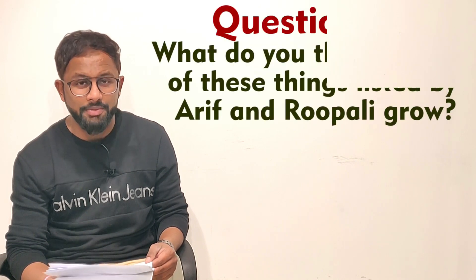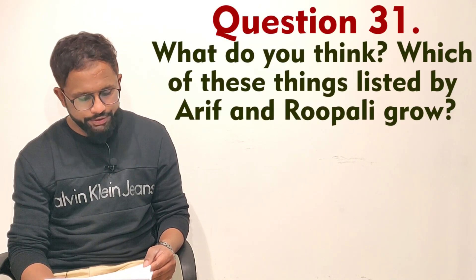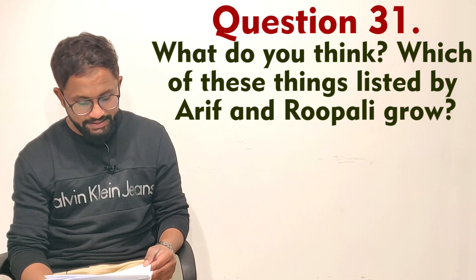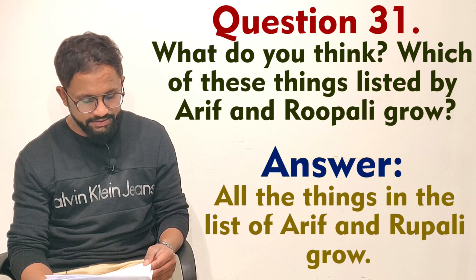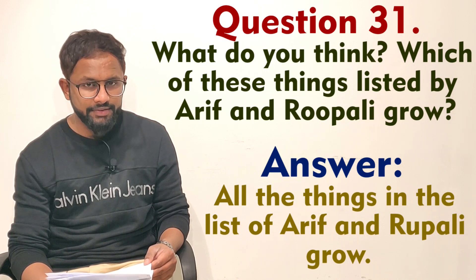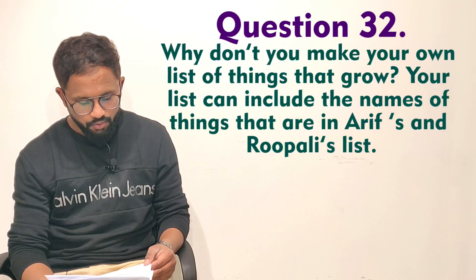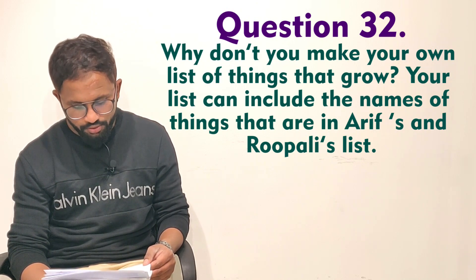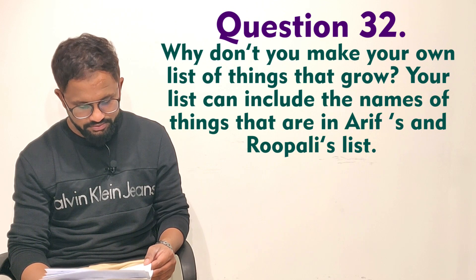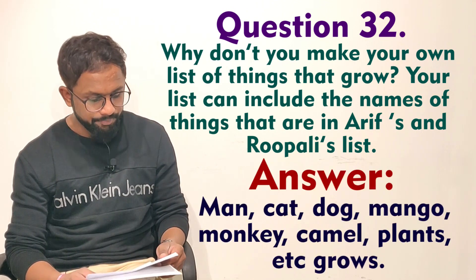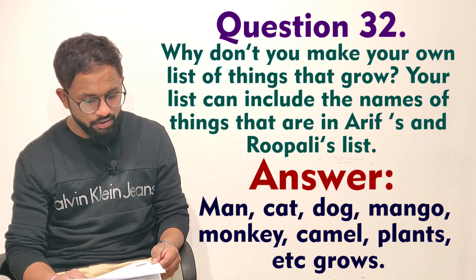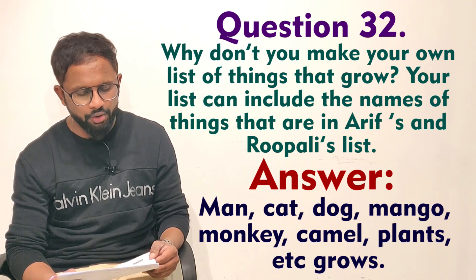At page 165, question thirty-one: which of these things listed by Rafi and Rupali grow? Answer: all the things in the list of Rafi and Rupali's grow. Question thirty-two: why don't you make your own list of things that grow? Your list can include the names of things that are in Rafi and Rupali's list. Answer: man, cat, dog, mango, monkey, camel, plants etc. grow.